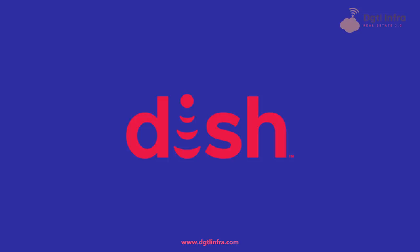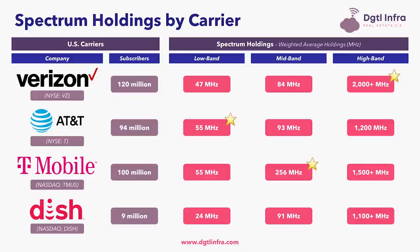Finally, moving to DISH Network: they are number four out of the four carriers in low-band holdings, number three in mid-band holdings, and number four in high-band holdings. In low-band, DISH holds 24 MHz of spectrum depth. In mid-band, DISH holds 91 MHz. And in high-band, DISH holds over 1,100 MHz of spectrum depth.